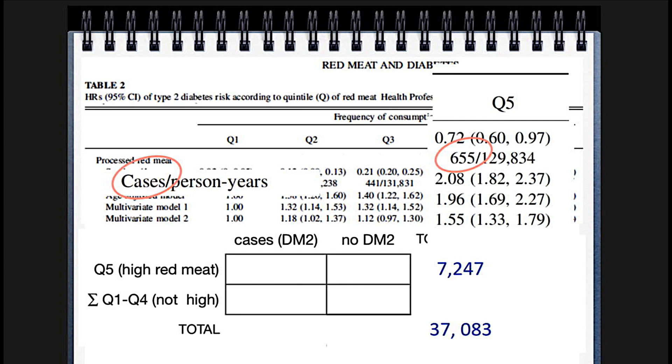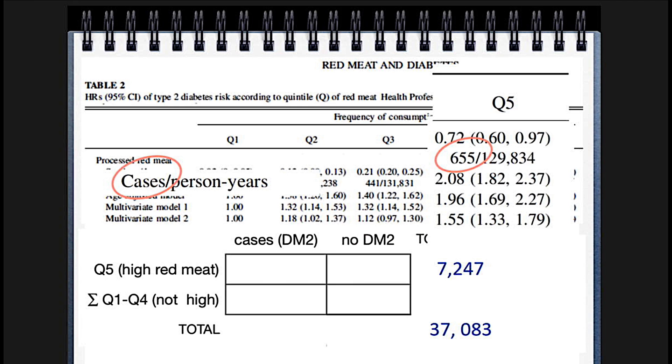What I'm doing is treating this just like a diagnostic test, because the mammogram math isn't tied to mammograms specifically. What they were trying to do in the paper, unspoken, is to say: if you're a red meat eater, is that diagnostic of getting type 2 diabetes? They're saying it's a good diagnostic test. We're asking: is it really? Because we have 7,247 red meat eaters, and how many cases do they get? It's 655.